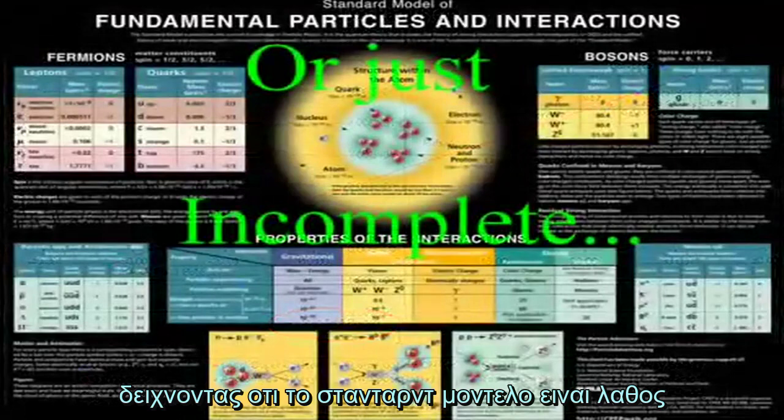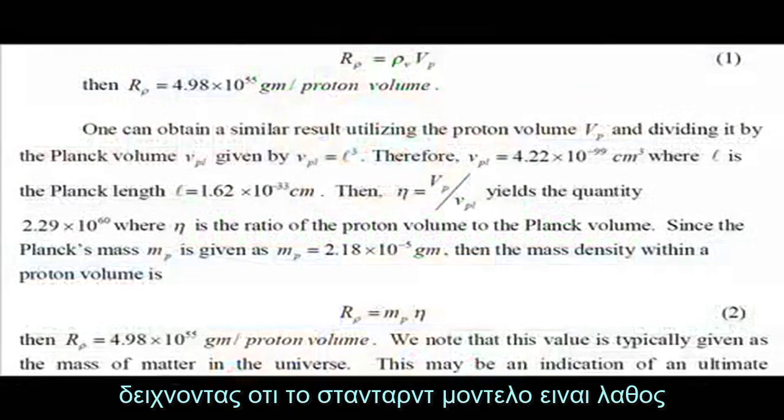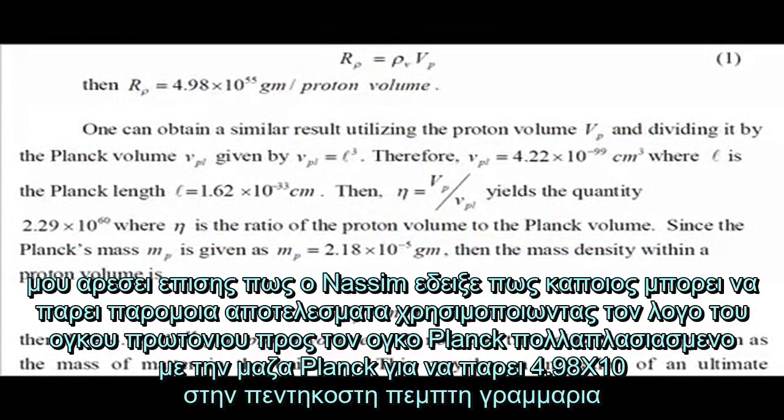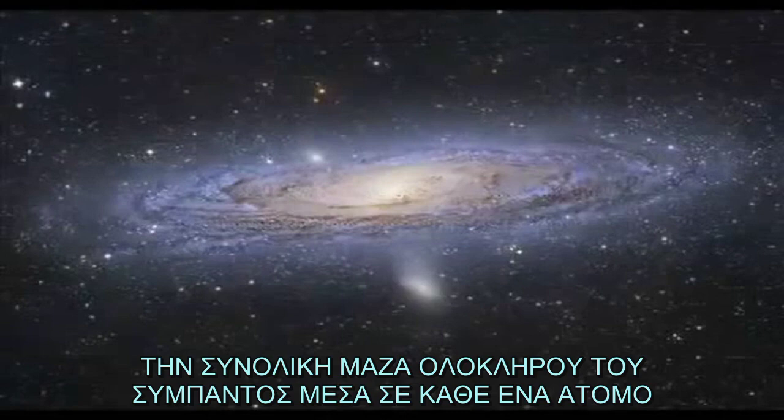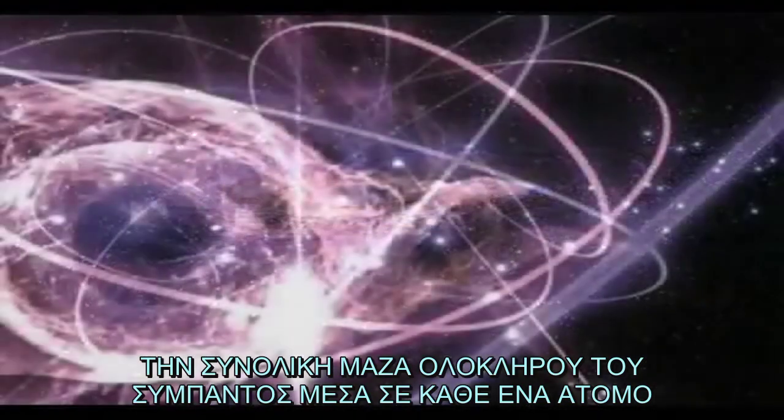I also liked how Nassim showed how one can obtain similar results by using the proton volume to Planck volume ratio multiplied by the Planck mass to get the same result of 4.98 times 10 to the 55th grams, the entire mass of the universe inside every single atom.